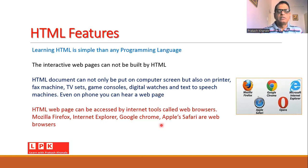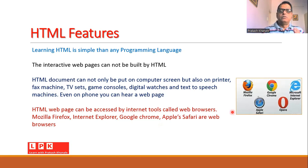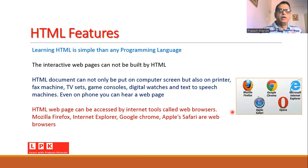HTML web pages can be accessed by internet tools called web browsers. There are several web browsers available, such as Google Chrome, Mozilla Firefox, Microsoft Internet Explorer, and Apple Safari. Most web browsers are available with operating systems, and you can use these browsers whenever you want to access an HTML document.